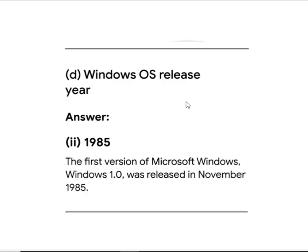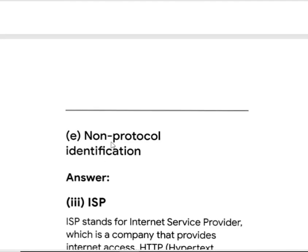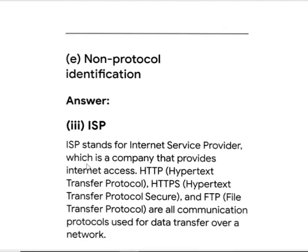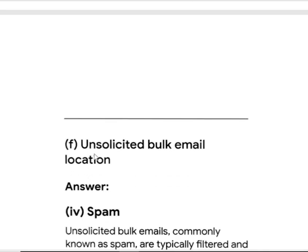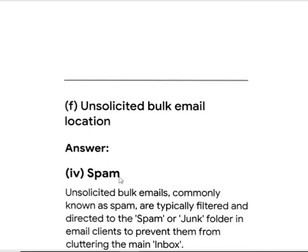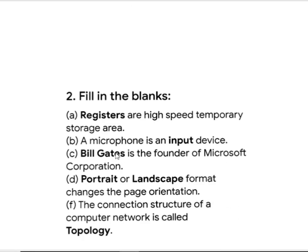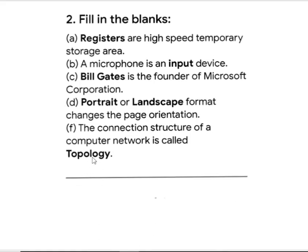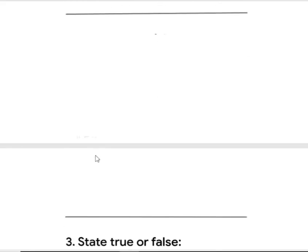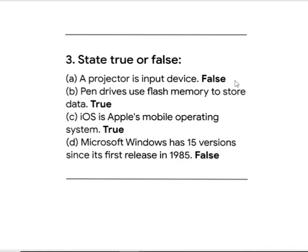Windows was released in 1985. For network protocol identification, the answer is Roman numeral 3. ISP is the next answer, then spam. For fill in the blanks: registers, input, Bill Gates, topology are the answers.